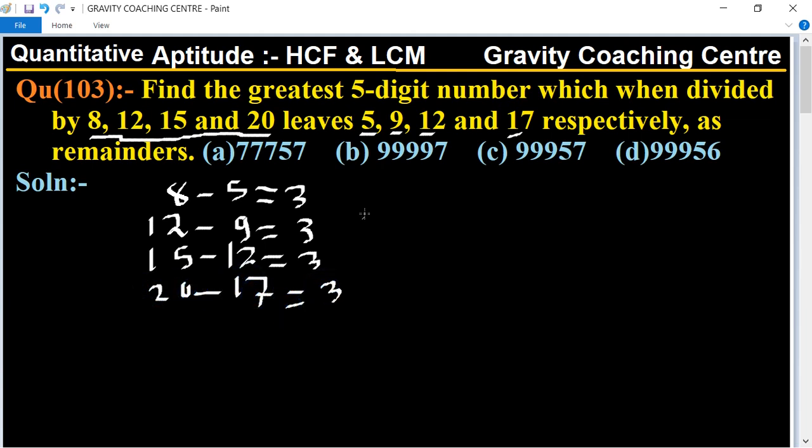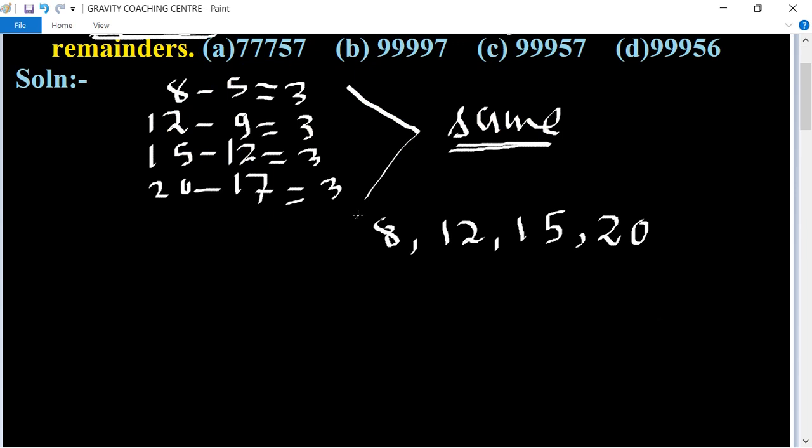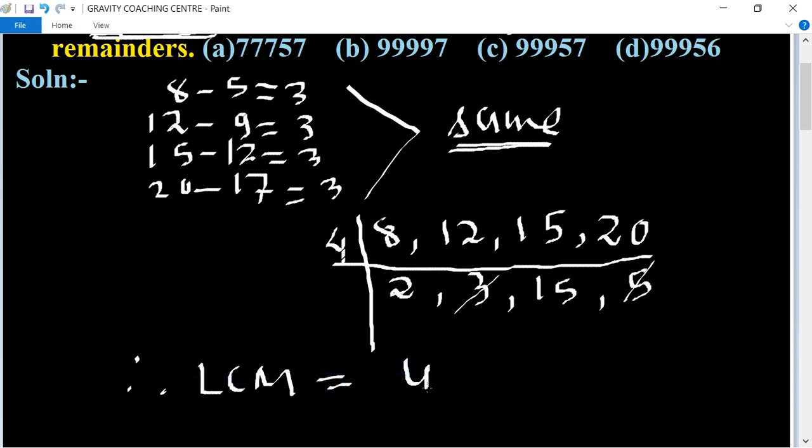So here in each case the difference is 3. Now we find the LCM of 8, 12, 15, 20. So the table of 4: 4 times 2 is 8, 4 times 3 is 12, 4 times 5 is 20. 15 is divisible by 5 and 3, so we cancel them.